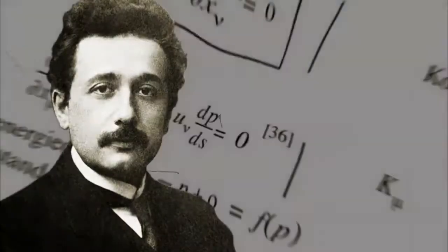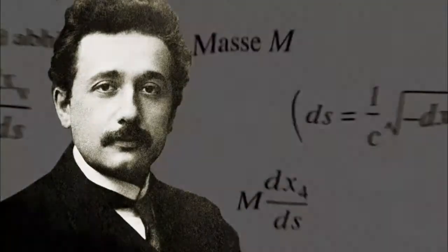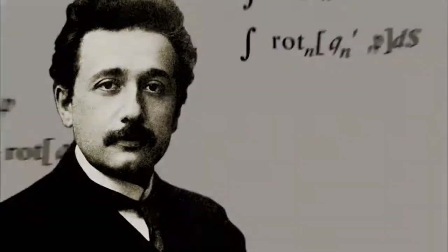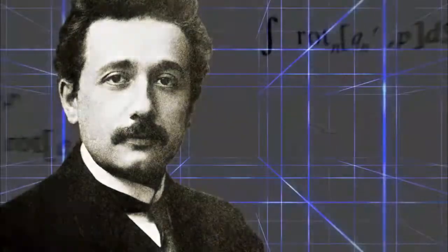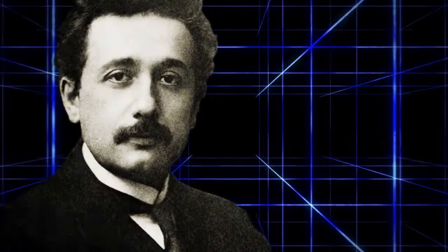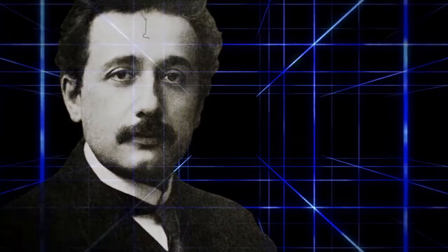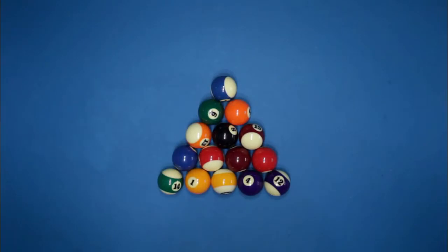After puzzling over this problem for more than 10 years, Einstein reached a startling conclusion. The secret to gravity lay in the nature of space-time. It was even more flexible than he had previously realized. It could stretch like an actual fabric. This was a truly radical break from Newton.